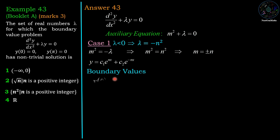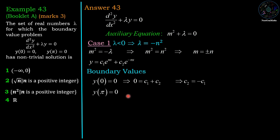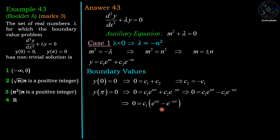Applying the first boundary condition y(0) = 0: substituting x = 0 gives c₁ + c₂ = 0, so c₂ = −c₁. Applying the second boundary condition y(π) = 0: substituting x = π gives 0 = c₁eⁿᵖ + c₂e⁻ⁿᵖ. Since c₂ = −c₁, this becomes 0 = c₁(eⁿᵖ − e⁻ⁿᵖ).